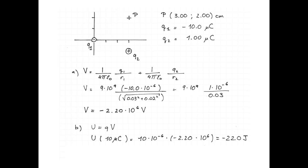So the potential energy of the 10 microcoulomb charge is 10 microcoulombs multiplied by negative 2.2 times 10 to the 6 volts. That's negative 22 joules. And the potential energy of the negative 10 microcoulomb charge will be 22 joules.